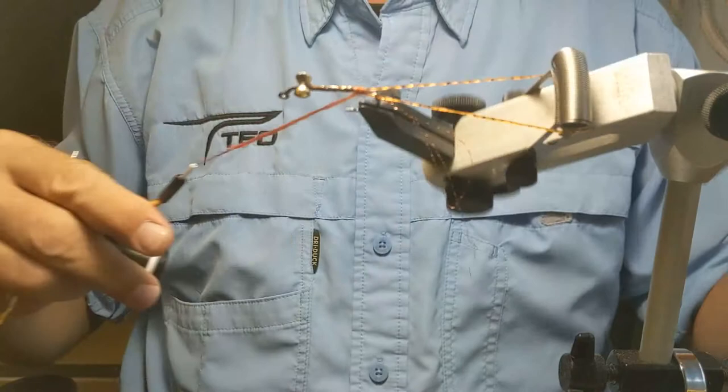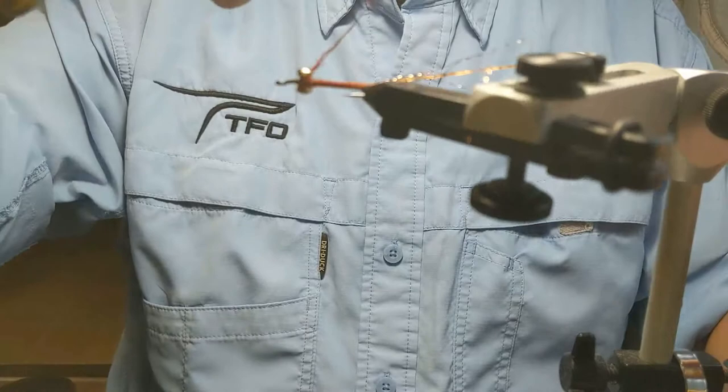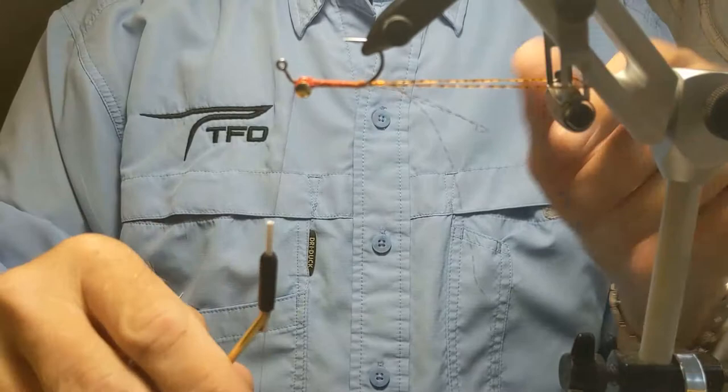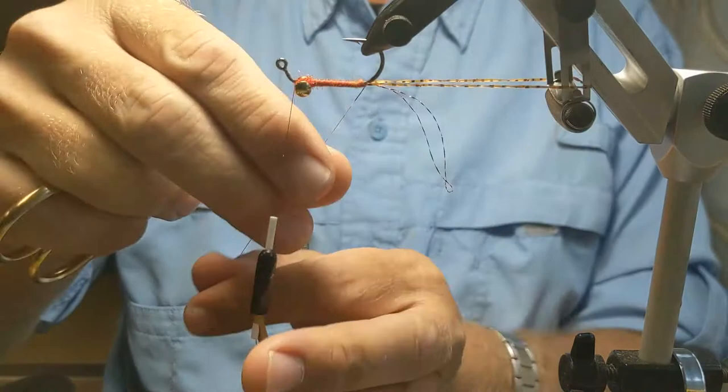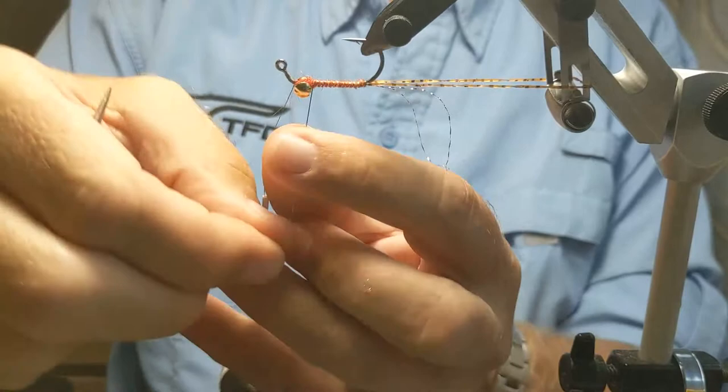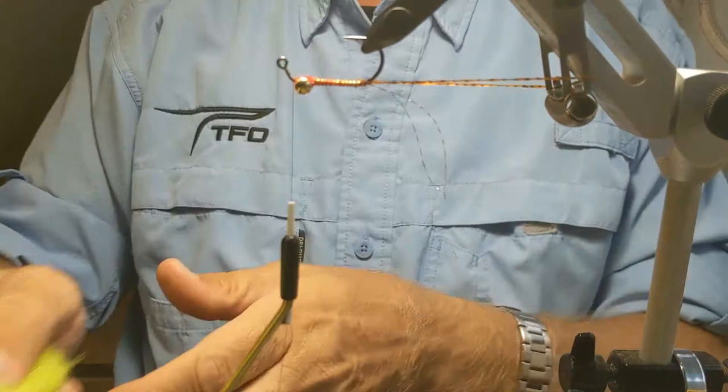Get that dubbing in. Spin it on. Dub it up. Several crosses through the eyes. Kind of finish it off. Now I rib with one of the two pieces of copper wire. Run the ribbing down. Get that ribbed off. Trim. And we're done with our body.